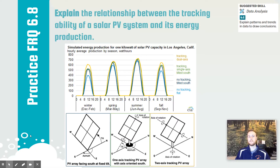For today's practice FRQ on topic 6.8, take a look at the graph and the diagram below it, and try to explain the relationship between the tracking ability of a solar PV system and its energy production.